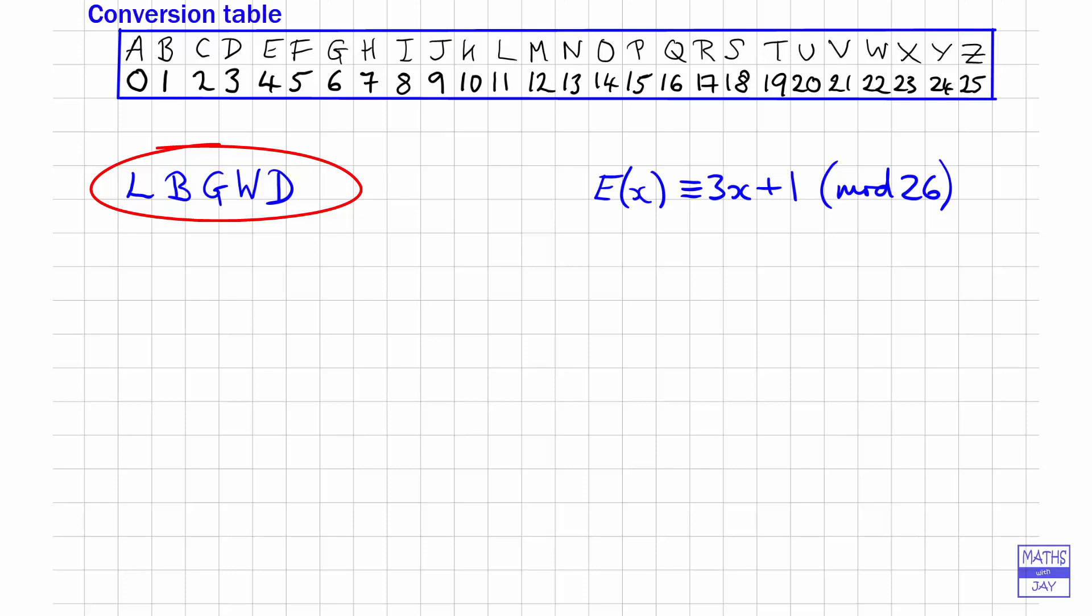So what we've got is a conversion table so that you know how we started off when we started with the original word. We've got the new word that we got from using the enciphering code that you see here, so we used this mapping x onto 3 times x plus 1, and we were working modulo 26.